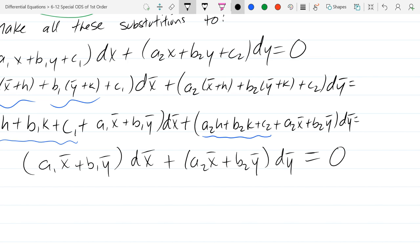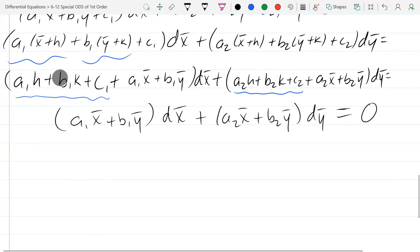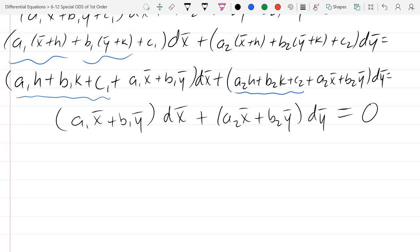And we're just left with a1x bar plus b1y bar dx bar. And very similar on the other side, a2x bar plus b2y bar dy bar. And I'll just rewrite that zero on the right side. So yes, we did change x's into x bars basically and y's into y bars. But why is this a little bit nicer than what we originally had? So we eliminated our constants. It's a lot of effort to get rid of two constants. So we did have to shift over and up, but we got rid of some constants. Unfortunately, it's not separable. But what was our last section? Homogeneous. Homogeneous. So maybe they're homogeneous if we're lucky. So test, are they homogeneous or not?